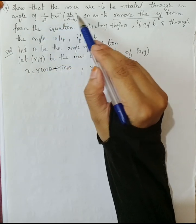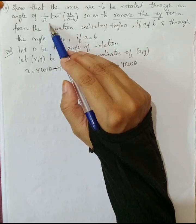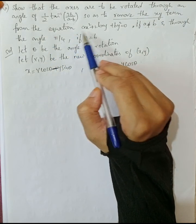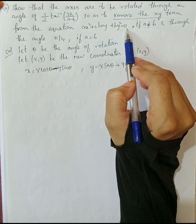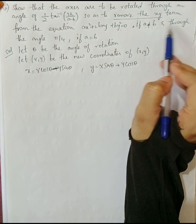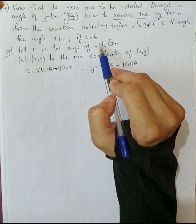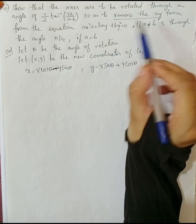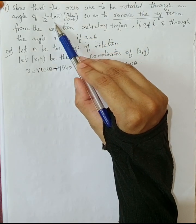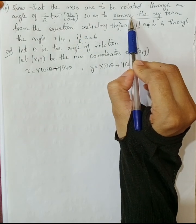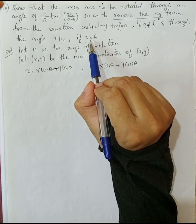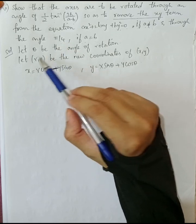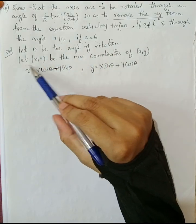Our next question is: show that the axis is to be rotated through an angle of half tan inverse 2h by a minus b, so as to remove the xy term from the equation ax squared plus 2hxy plus by squared equals 0, if a is not equal to b, and through the angle pi by 4 if a is equal to b. We have to find the angle of rotation. Let theta be the angle of rotation and capital X, Y be the new coordinates of x and y.